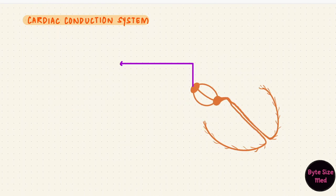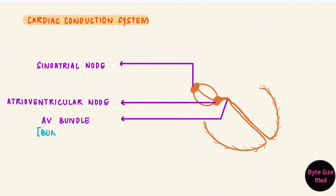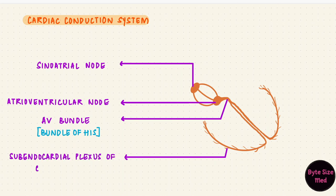There's the sinoatrial node, the atrioventricular node, the atrioventricular bundle (also known as the bundle of His), and the subendocardial plexus of conduction cells, also called the Purkinje fibers.